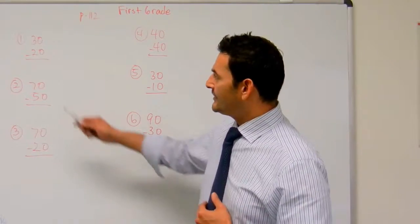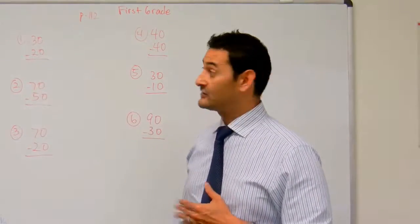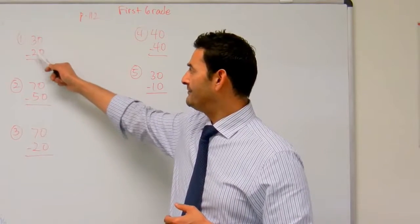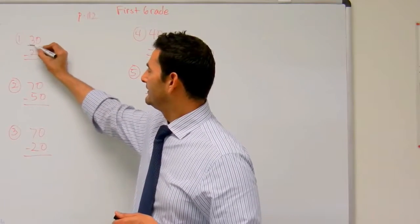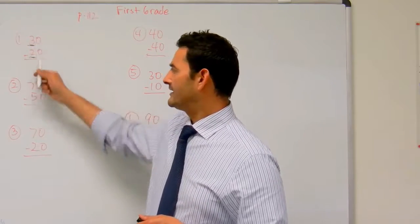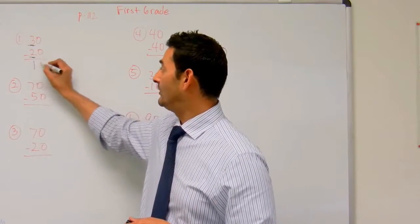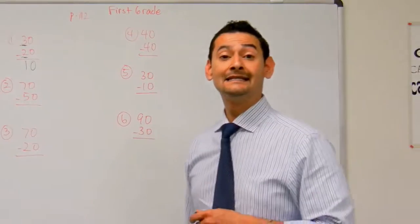So remember, here we have a multiple of 10, that's 20, that's two bundles. So 30 minus 20, remember, let's just take a look at the tens place. 30 minus 20, go down two, that's one. 30 minus 20 is 10.